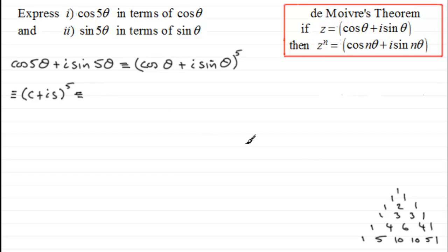So anyway, we end up with one lot of c^5. And then for the next coefficient it's going to be +5c^4·is. Next term is going to have a coefficient of 10, so it's +10c^3·(is)^2. And we work our way down through these remaining terms. So we've got 10c^2·(is)^3.